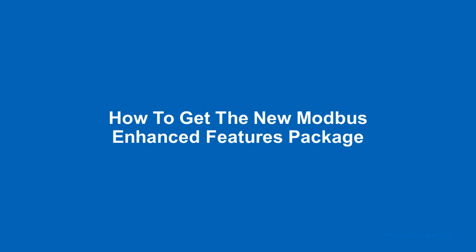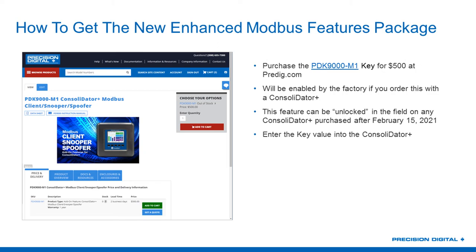If all this sounds interesting, how do you get the new Modbus Enhanced Features package? It's not standard on Consolidator Plus units. All you would do is purchase the PDK9000-M1 key for $500 at predig.com. This is an enabling key you enter into your Consolidator Plus to unlock these features. If you buy the key with the Consolidator Plus, we enable it for you at the factory. You can also unlock these features in the field on any unit purchased after February 15th, so you can always unlock this feature later when you need it.